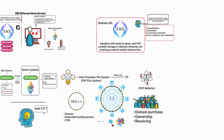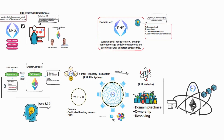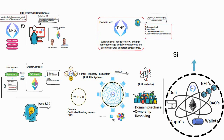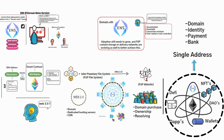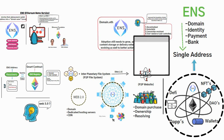ENS resides in the Ethereum ecosystem, which itself is a big technology. Rather than being an alternate blockchain or network, it exists in an ecosystem where it can easily interact with most decentralized use cases. It also pairs up well with DApps, DeFi, NFTs, DAOs, and wallets, and it can integrate all of those use cases under a single address. With DNS, your domain, identity, payments, and bank are all separate things. However, with ENS you can unite all these things in a single address that becomes not only your site, but also an identity and a bank.